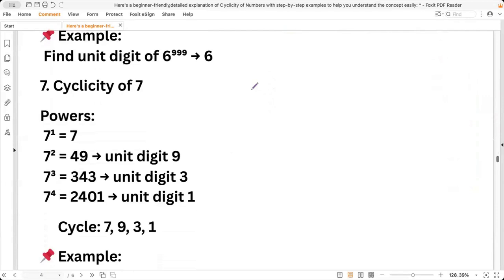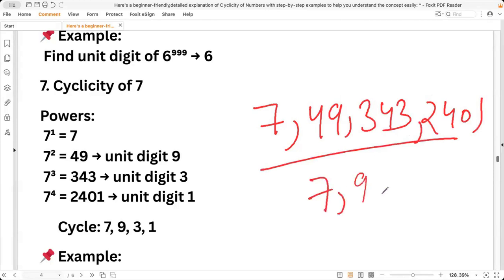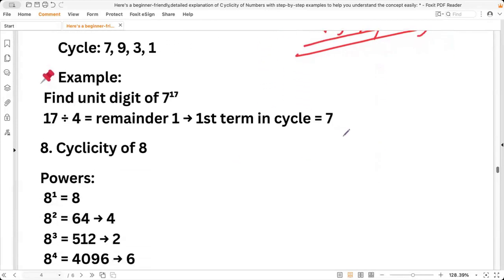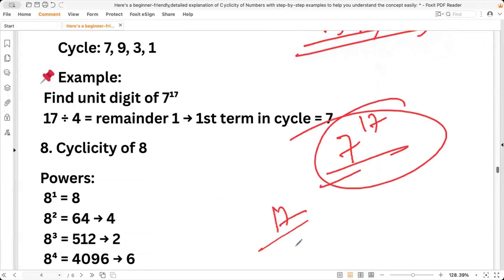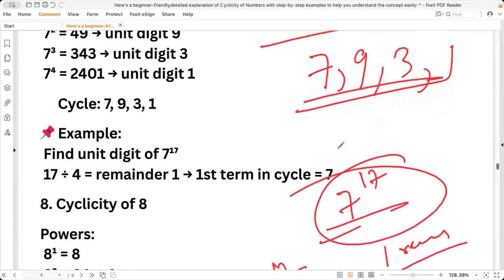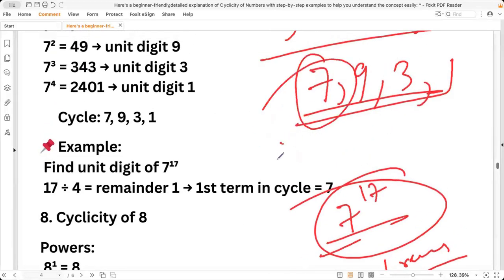Seven is very important. So 7^1 is seven, seven square is 49, cube is 343 and power four is 2401. So it moves like seven, nine, three, one in a block of four. So if you have to find 7^17, what is the unit digit? 17 divided by four, the remainder will be one. So in this cyclical pattern, the first term will be the unit digit. That is seven itself.